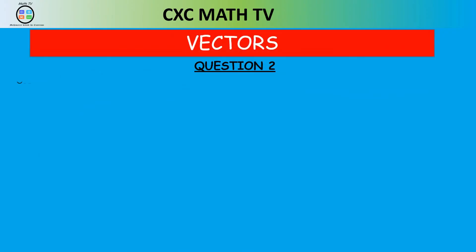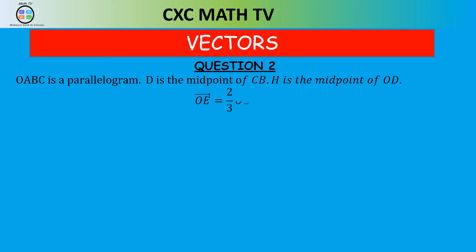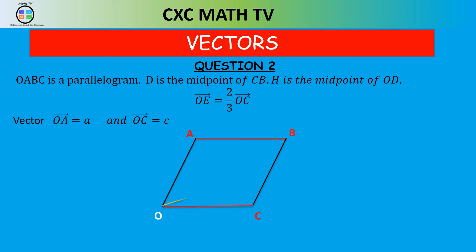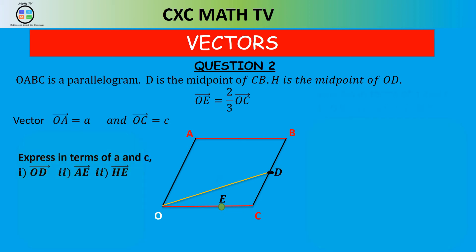Let's step up the level of difficulty. OABC is a parallelogram. D is the midpoint of CB, H is the midpoint of OD, and OE equals two thirds of OC. Vector OA equals A and vector OC equals C. Express in terms of A and C: vector OD, vector AE, and vector HE.